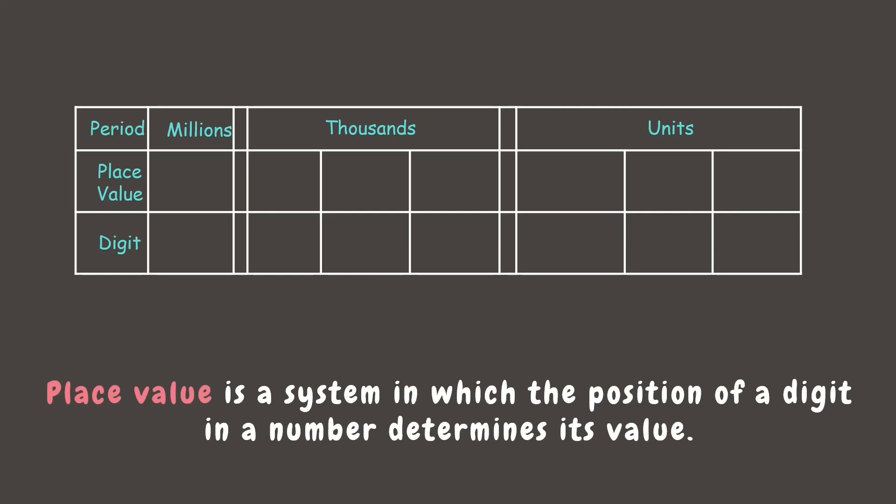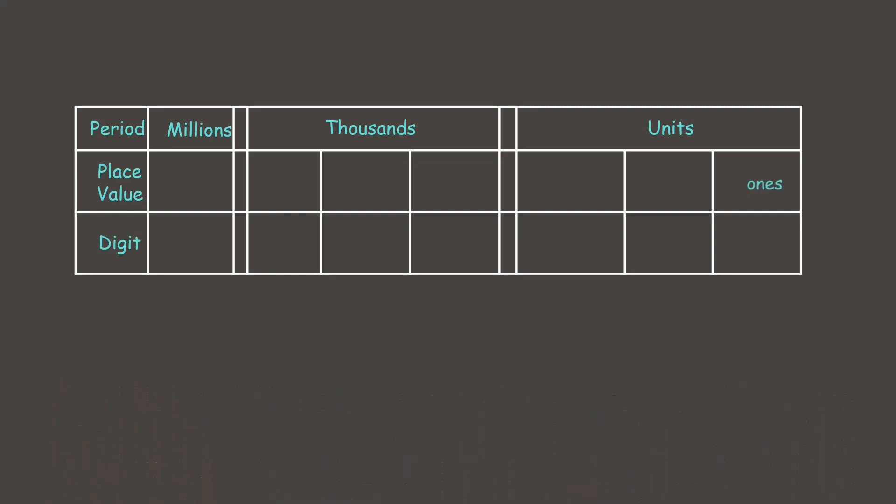Now looking at the place value chart, we can see that it is divided by a period. We have the units, thousands, and millions. Under units we have the ones, tens, and hundreds. After that we have the thousands period, and under thousands period is thousands, ten thousands, and hundred thousands. And finally we have millions.